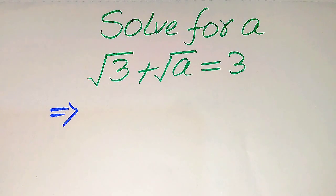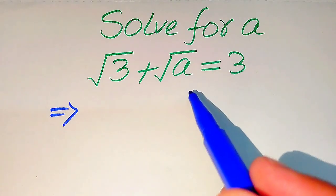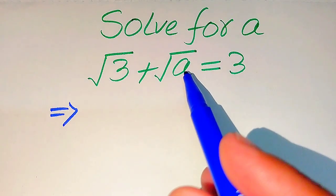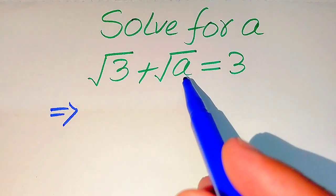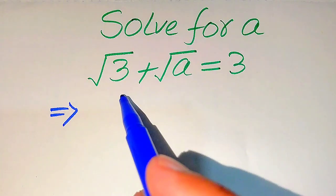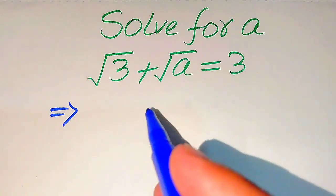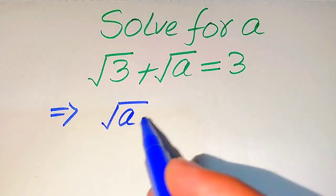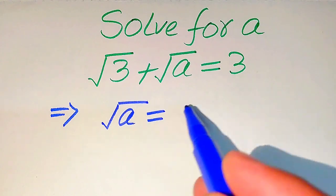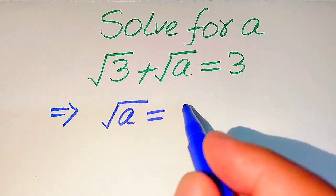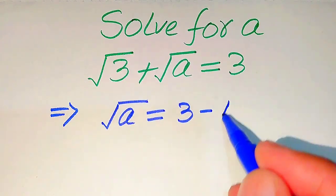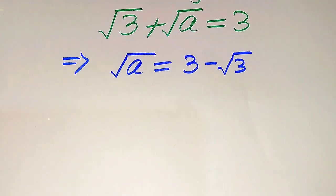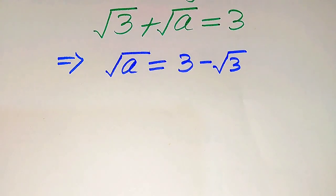In order to find the value of a, we first need to eliminate this square root sign from a. For this, we move the square root of 3 to the right hand side, and after moving it, it will be written as: square root of a equals 3 minus square root of 3.